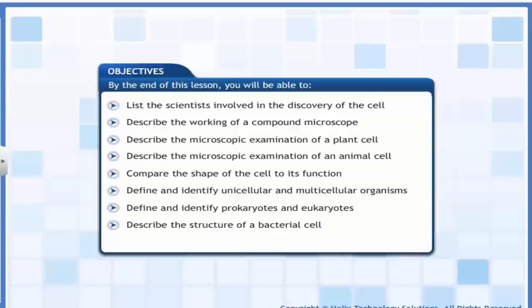By the end of this lesson, you will be able to list the scientists involved in the discovery of the cell, describe the working of a compound microscope, describe the microscopic examination of plant and animal cells, compare the shape of the cell to its function, define and identify unicellular and multicellular organisms, define and identify prokaryotes and eukaryotes, and describe the structure of a bacterial cell.